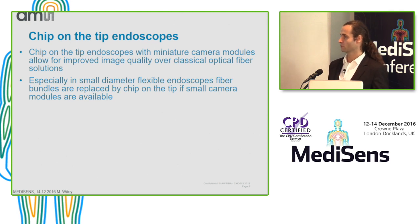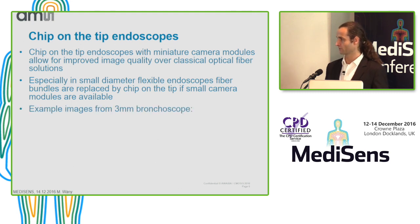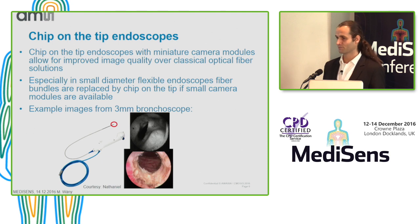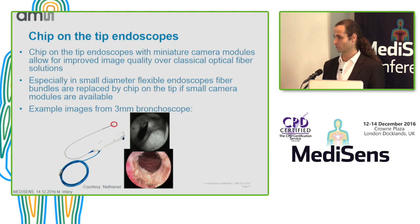Especially in small-diameter flexible endoscopes, nowadays we have a clear shift from fiber bundles to chip-on-the-tip endoscopes, mainly driven by enhanced image quality. You can see two images side by side from a fiber bundle endoscope and from a chip-on-the-tip endoscope. It does not take a lot of words to describe on which image you can see more, where you can make a better diagnosis and ultimately a safer surgery.